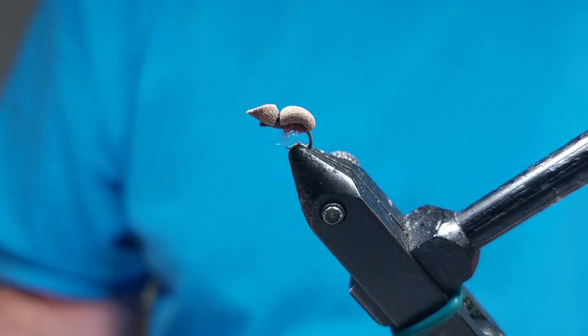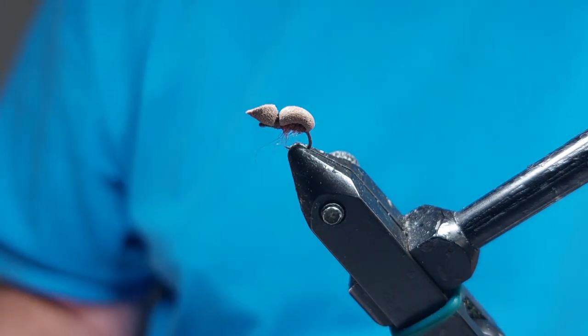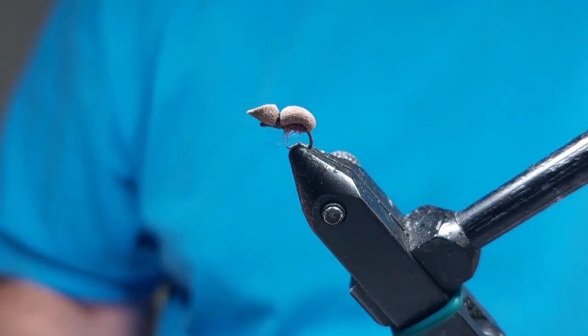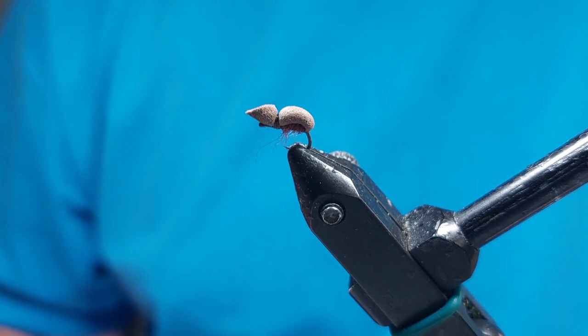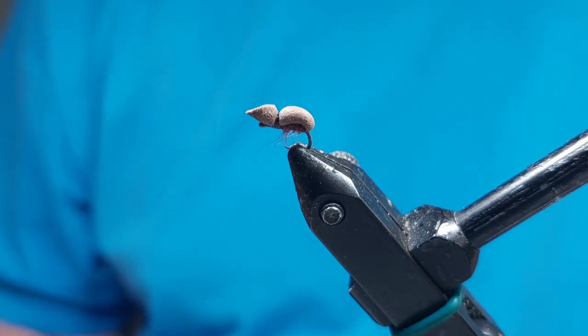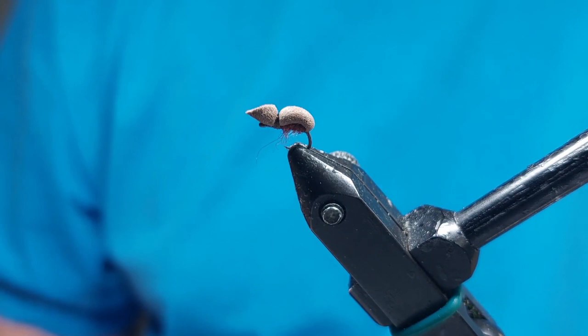It's amazing how simple that fly is and how many fish it catches. Cast it to rising fish, they'll take it no problem. I go down, this is an 18 but I go down to 20s as well, same tying obviously just a slightly smaller if they get pickier which they can do throughout the summer months. But go down 18s and 20s are normally very productive.